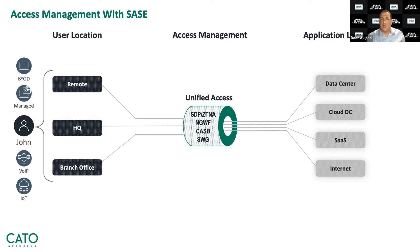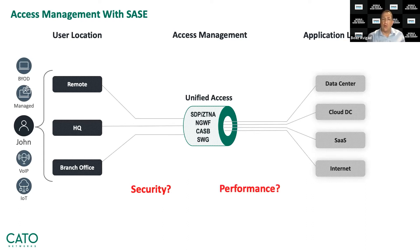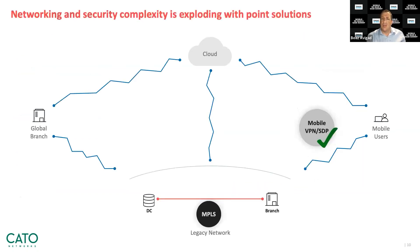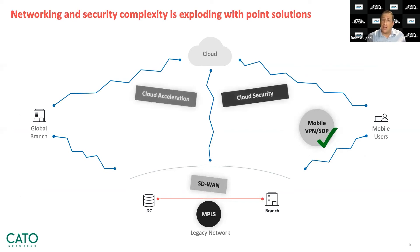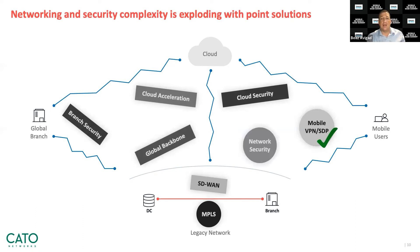Access management is a critical component of enterprise network security, however it is not the full solution — it is only part of what we actually need. In order to provide complete protection, we need to add advanced security capabilities such as an intrusion prevention system, IPS, and next-generation anti-malware. Beyond security, we need to also consider user experience and ensure application performance by using solutions such as SD-WAN and a private backbone. The digital transformation has brought new requirements: SD-WAN to address the high cost, rigidity, and capacity constraints of MPLS; cloud acceleration and security to support cloud access; branch security and a global backbone for distributed locations; and network security for on-premises data centers and for protecting east-west traffic.